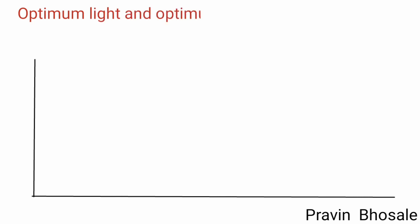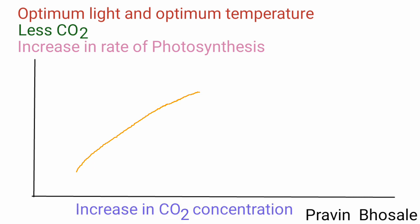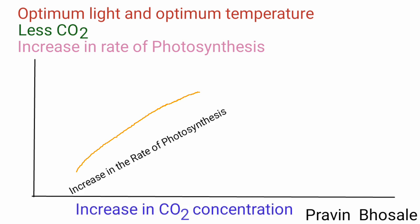Now, if there is optimum light and optimum temperature but less carbon dioxide, further increase in the rate of photosynthesis is possible only if there is an increase in carbon dioxide concentration. As carbon dioxide concentration increases, there will be an increase in the rate of photosynthesis, but again there will be a steady state.